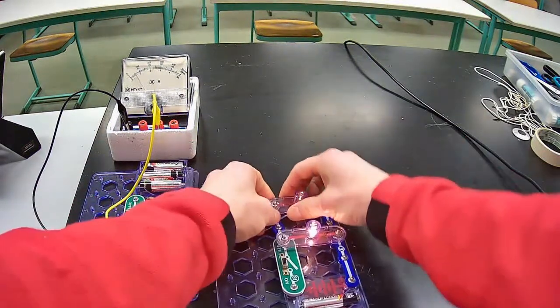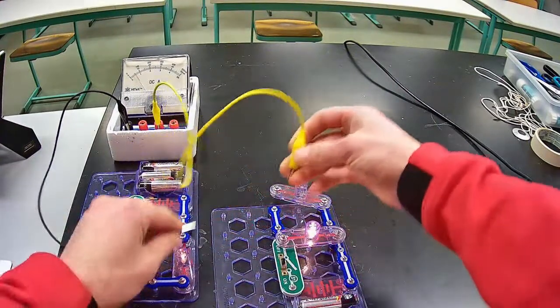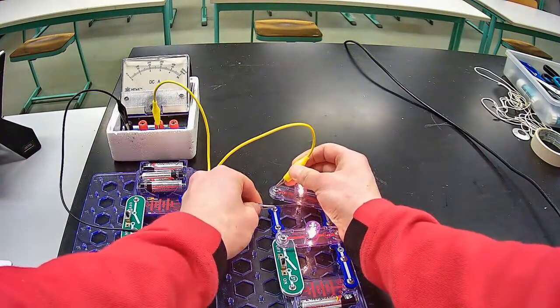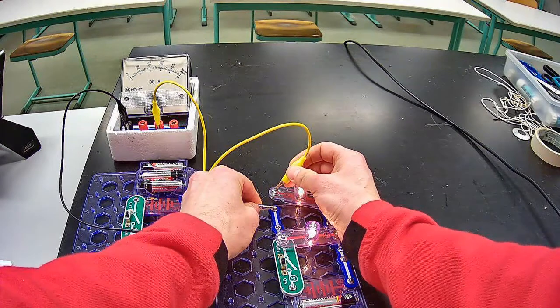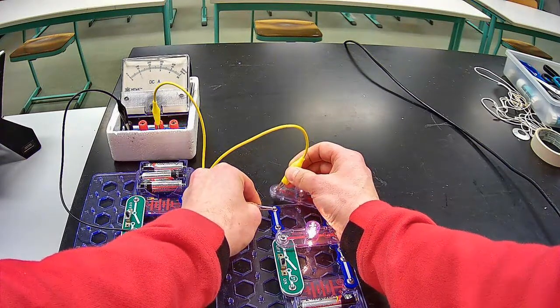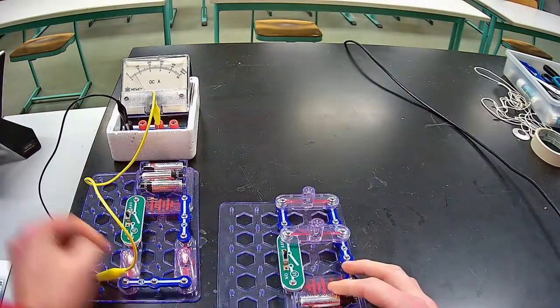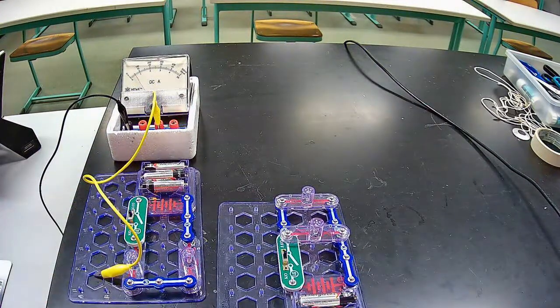And then my last set of data for this lab is going to be getting the current reading for R2. Again, I'm going to close the circuit with the lead wires. And once I get that needle to steady, it looks like I have about the same number, the same value of about 210 milliamps.